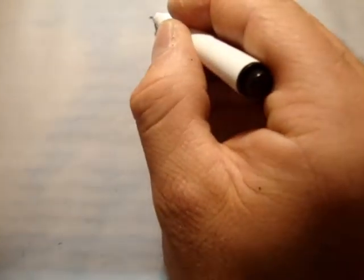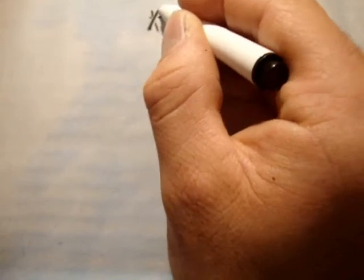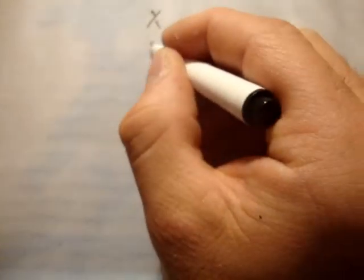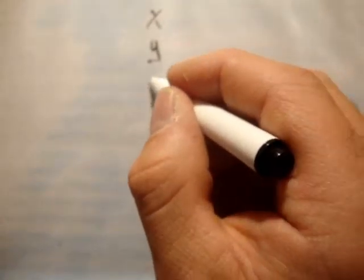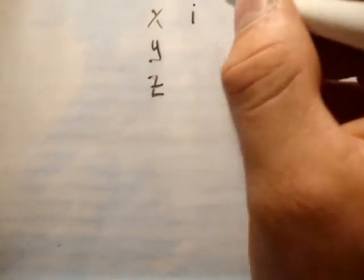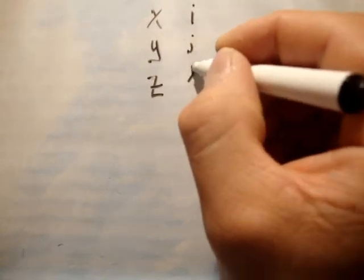So we know of three dimensions. We know of the x-axis dimension, the y-axis or dimension, and the z-axis, or dimension. Now, I'm going to say that there exist three vectors called unit vectors. One is i, one is j, and one is k.